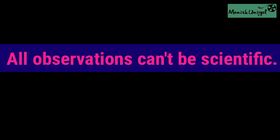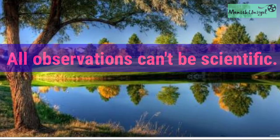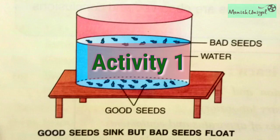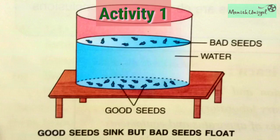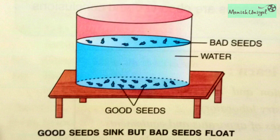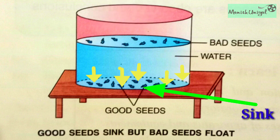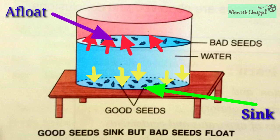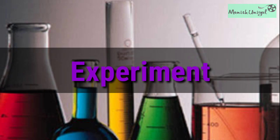But all observations can't be concluded to be scientific — for example, a poet's observation about nature. Activity 1: A farmer puts some seeds into a beaker full of water. He observes that most of the seeds sink and a few seeds stay afloat. It is believed that the seeds that remain afloat are bad ones, while those which sink to the bottom are the good seeds. This method helps farmers to separate the good seeds from the bad ones. Such separation is possible only because of proper and careful observation.